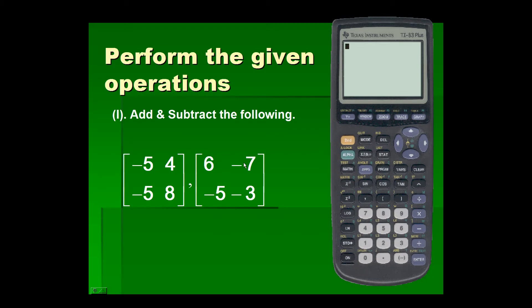Operations with matrices. In this example, we shall perform the given operations — we will add and subtract the following matrices. A matrix is classified by its dimensions, that is, by the number of rows and columns it contains. In this example, we will add and subtract two matrices, each containing two rows and two columns, so we should classify both of these as two by two matrices.